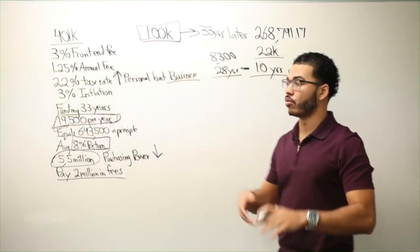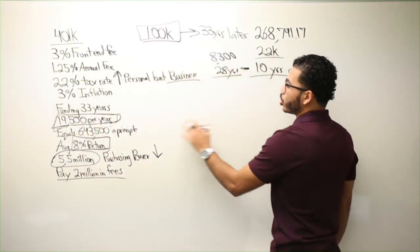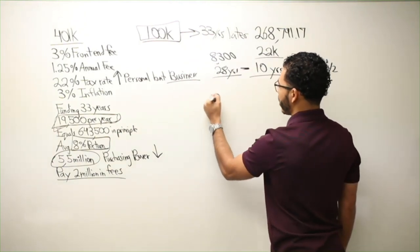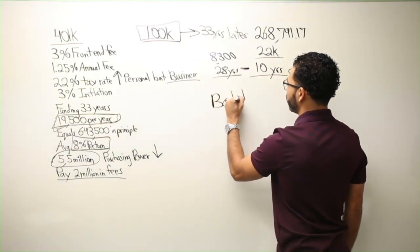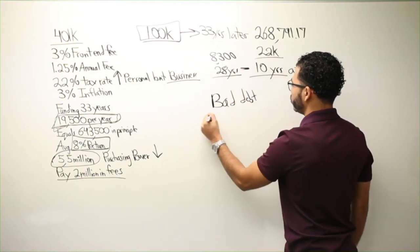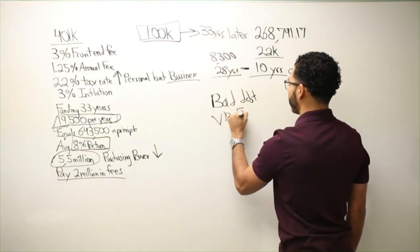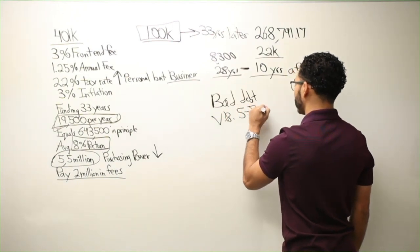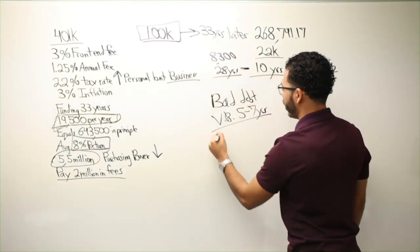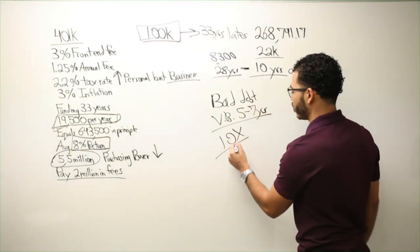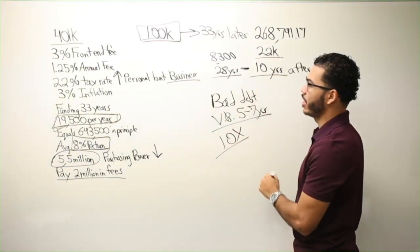So that $19,500 in someone's scenario, whoever's watching, could have been used to wipe out whatever bad debt you had now, do velocity banking, get debt free in about five to seven years. And then 10x your income at least one time during your life. Just do that. Just 10x. Go from making $100,000 to $1 million a year.